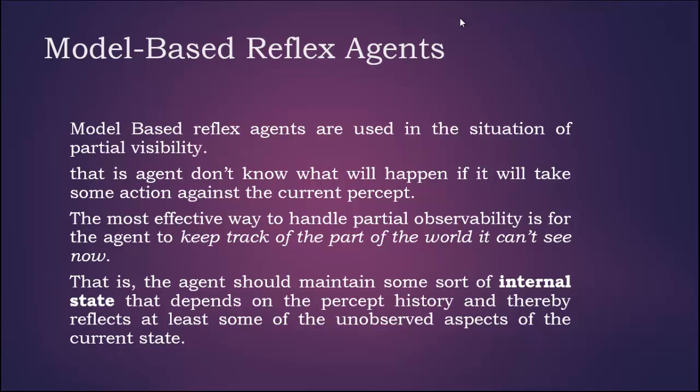The most effective way to handle partial observability is for the agent to keep track of the part of the world it can't see now. The agent should maintain some sort of internal state that depends on the percept history and thereby reflects at least some of the unobserved aspects of the current state.